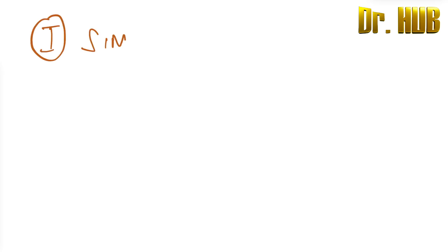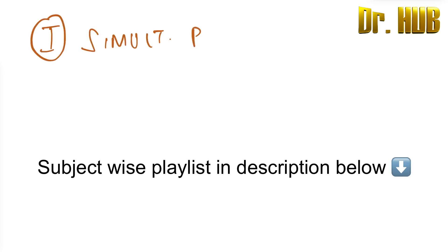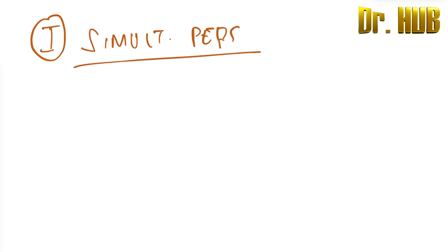Number one being the simultaneous perception. So here in simultaneous perception, there's the ability to see two dissimilar objects simultaneously.